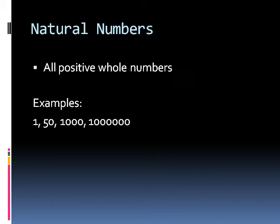Now there are other number types. And let's go through the other number types that are contained within the real numbers. So within the real numbers there is one called the natural numbers. And the natural numbers are all of the positive whole numbers. So this is let's say one, fifty, a thousand, and a million. These are all natural numbers.